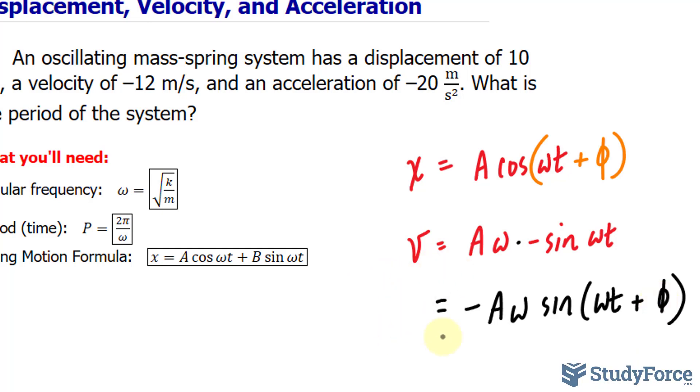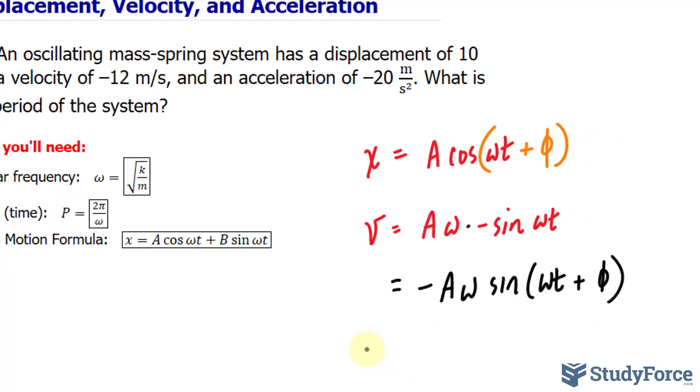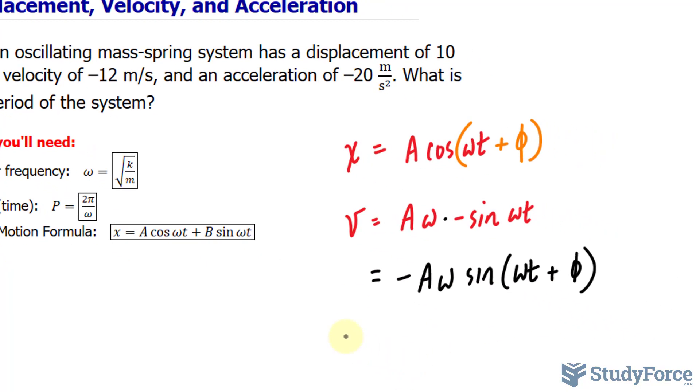Now, taking the derivative of the velocity function gives us the function for acceleration. If I take the derivative of this function that's in black, I have the derivative, which is v prime, and that's our acceleration, is equal to the derivative of sine is cosine. I have negative A omega squared cosine omega t plus our phase angle.